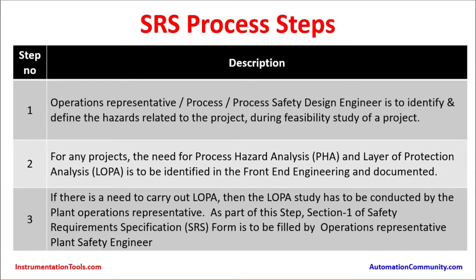In step number one, the operations representative and process safety design engineer are to identify and define hazards related to the project during the feasibility study. The operations team needs to sit together and identify those hazards. In step number two, for any project, the need for process hazard analysis (PHA) and layer of protection analysis (LOPA) is to be identified during front-end engineering and documented.